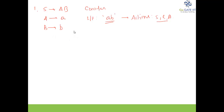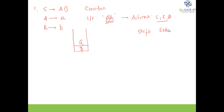The parser will have a stack with dollar as the end-of-stack symbol. The input string is 'ab'. First, 'a' is pushed onto the stack — this is a shift action.